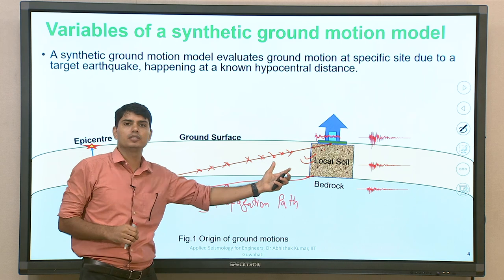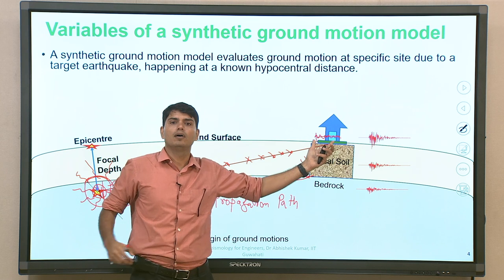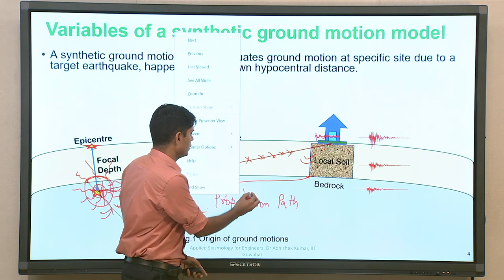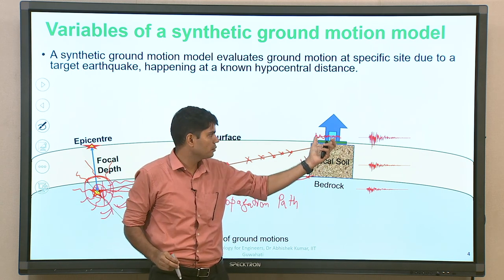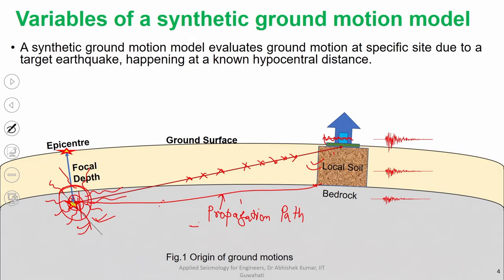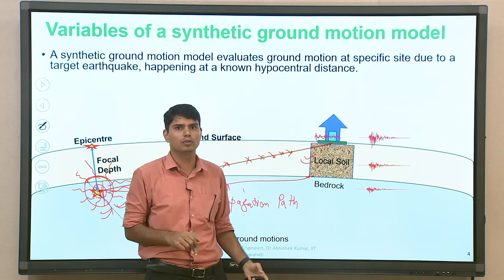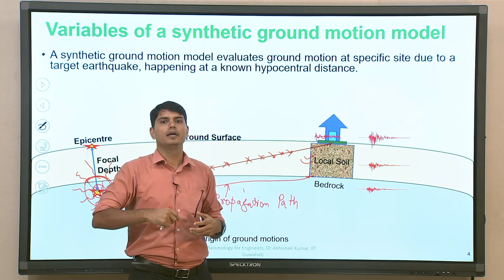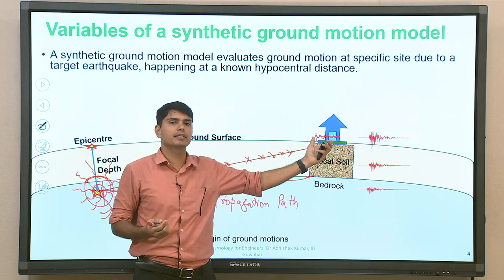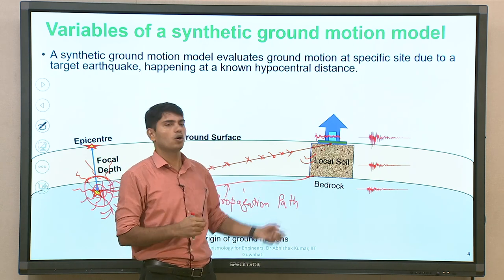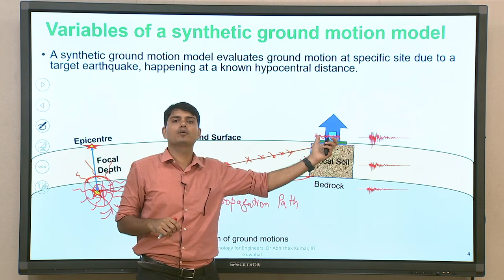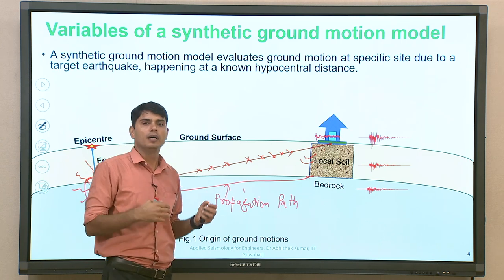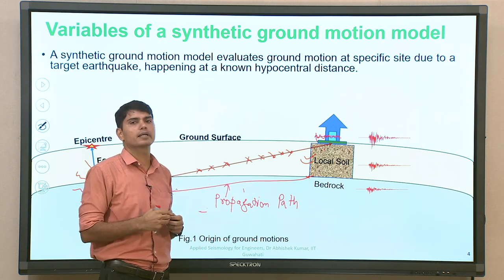If we are able to capture all these parameters accurately, we will be able to simulate whatever would have been the ground motions for, say, the 1934 earthquake. The 1934 earthquake generated somewhere, and as a result I am able to simulate the ground motion — how much would it be at Patna, at Lucknow, or any other site maybe 300 to 500 kilometers radial distance from the epicenter. I can take that into account, generate ground motion, use it for performance-based analysis, find out the response of my building, generate design response spectra, and find out the earthquake loading for earthquake resistant design.